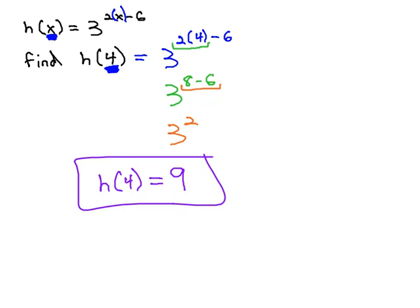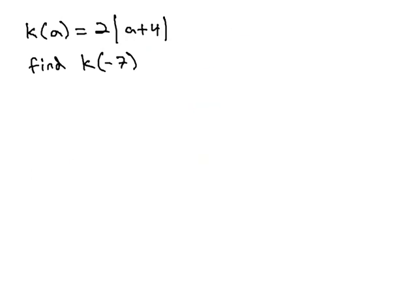Let's try one more example. In this example, we're told k of a is equal to the function 2 times the absolute value of a plus 4, and we're asked to find k of -7. Notice the -7 replaces the a in the notation. We'll do the same thing inside the function, replacing the a with -7.